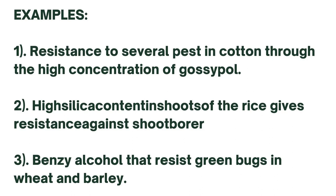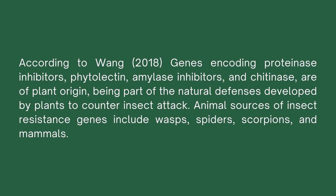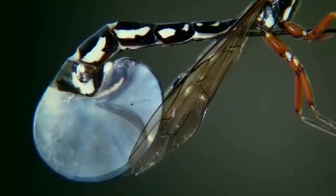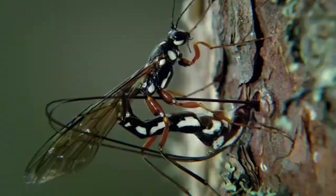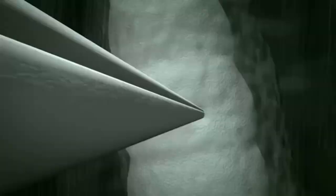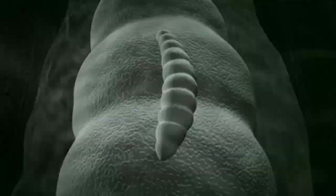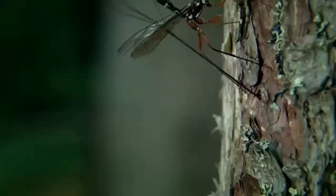Genetics of insect resistance. According to Wang (2018), genes coding for proteinase inhibitors, phytolectin, amylase inhibitors, and chitinase are of plant origin, being part of the natural defenses developed by plants to counter insect attack. Plant protease inhibitors are natural plant defense proteins that inhibit proteases of invading insect herbivores. Their anti-insect efficacy is determined not only by their potency toward a vulnerable insect system, but also by the response of the insect to such a challenge. Phytolectin comes from lectin, and lectin domains are involved in plant immunity.